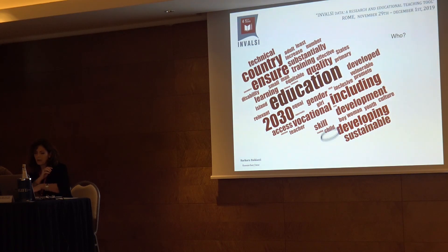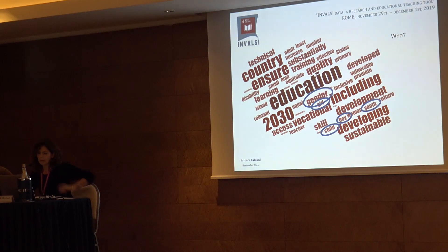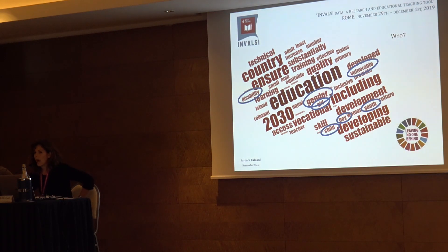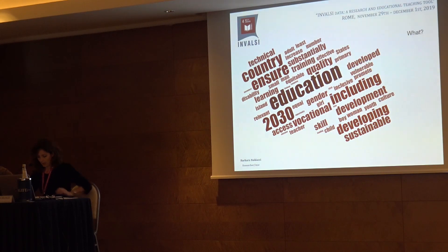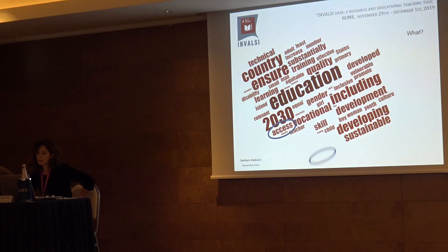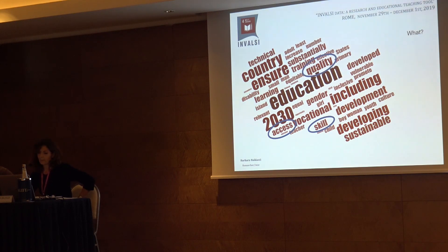Who is Goal 4 for? Goal 4 is for children and young people enrolled in the education system, for girls and boys — because there is a focus on gender in the Agenda — and also for vulnerable and disabled people. There is a key concept in this Agenda: leaving no one behind. The targets address access to the education system and the skills to achieve good literacy and numerical competences, with a focus on quality education and culture.